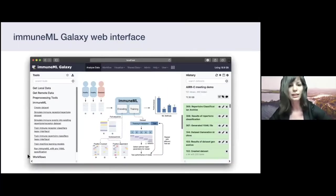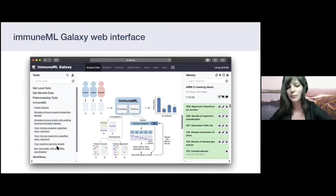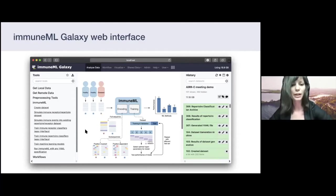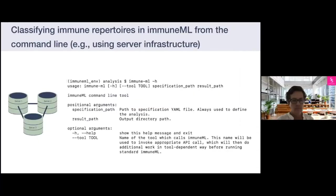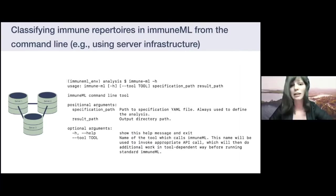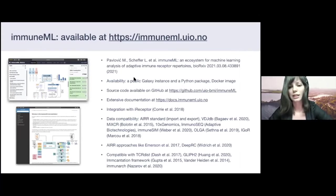We also have the Galaxy web interface at galaxy.immunml.uio.no, accessible from the main webpage, with different tools for different parts of this process. The platform can also be used from the command line or on a high-performance computing cluster depending on the use case. There is a preprint available on bioRxiv, a public Galaxy instance, and the source code is available on GitHub. We have extensive documentation and are also trying to integrate with popular tools in this field.